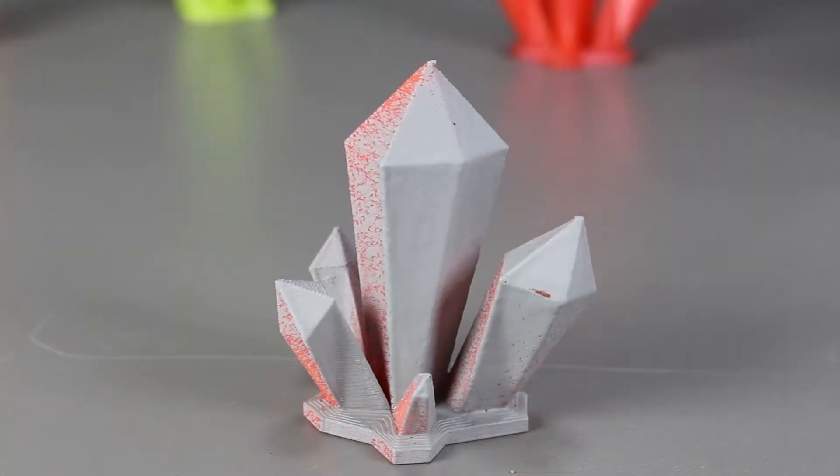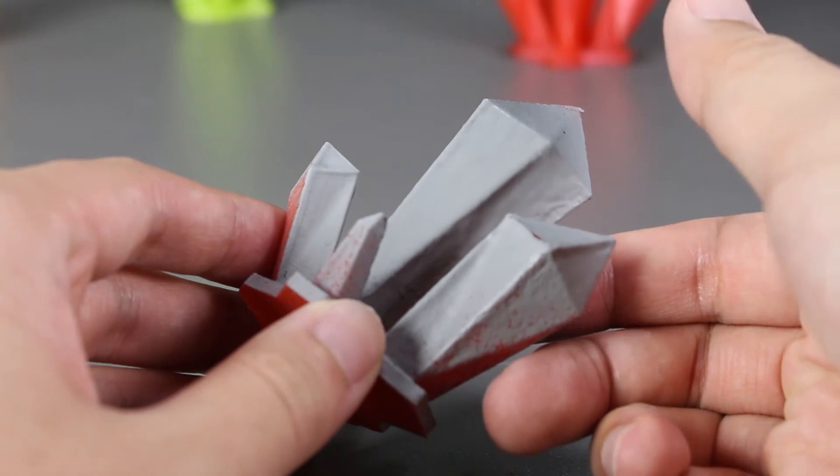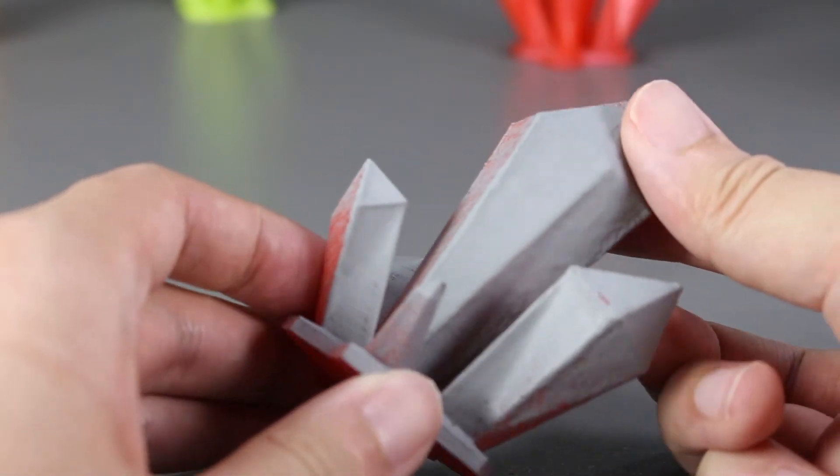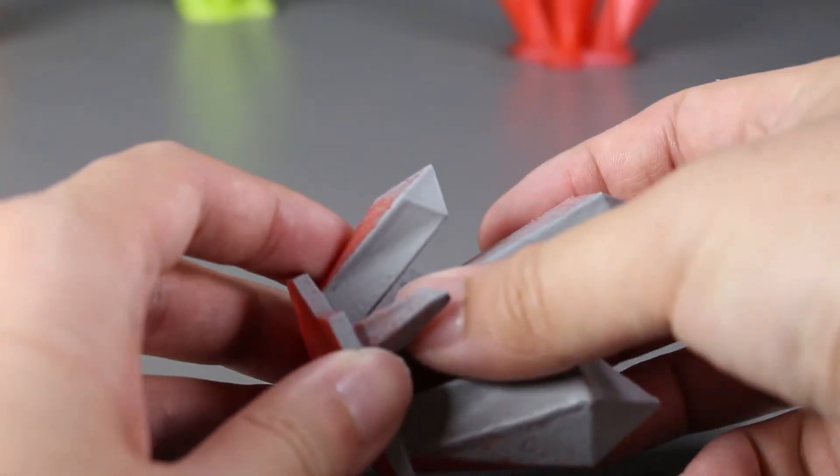Upon closer inspection, it looks like the primer stuck on fairly well onto the PLA print and also retained the same smoothness as when it was just with the top coat.